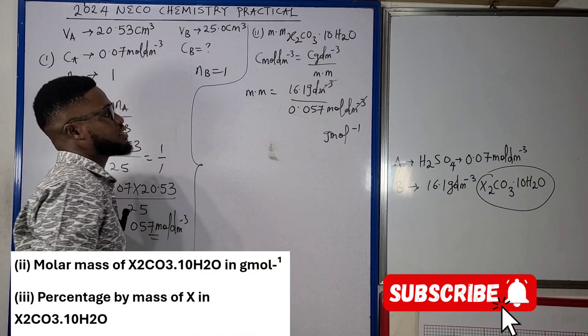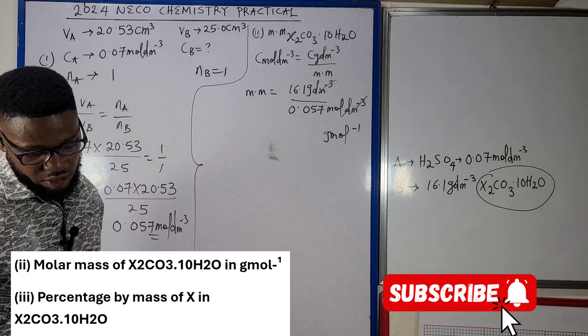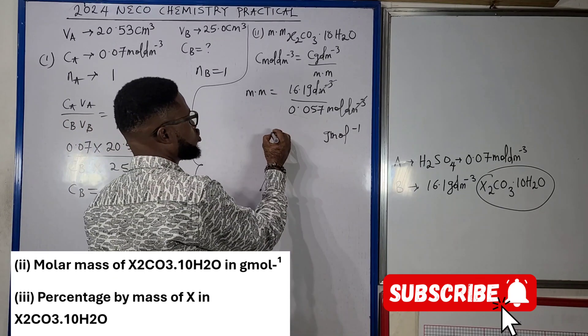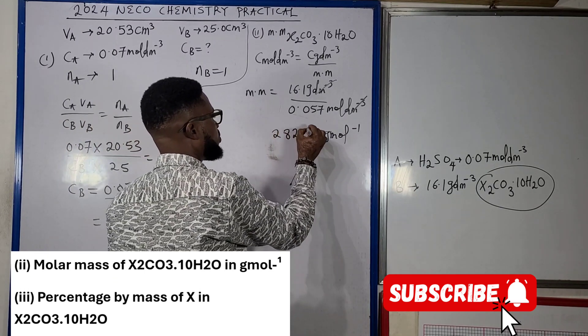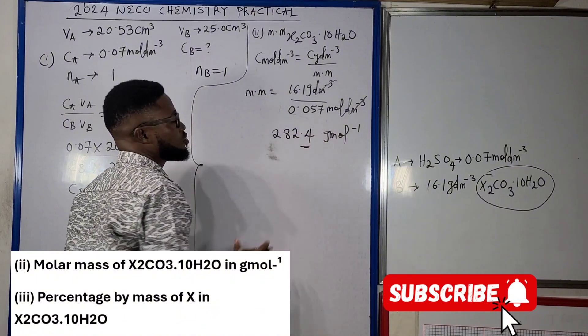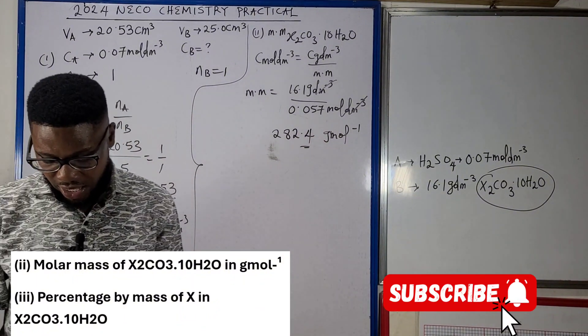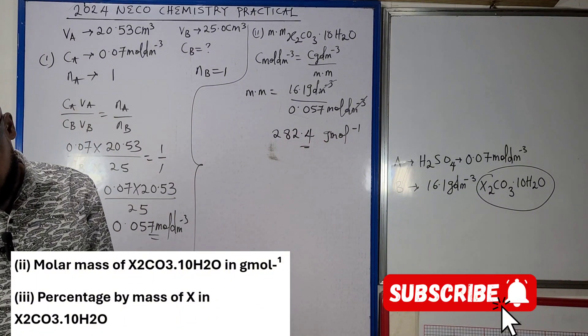This gives us gram per mole. So 16.1 divided by 0.057, we're going to get 282.4 gram per mole. That way we've been able to calculate our question B2.